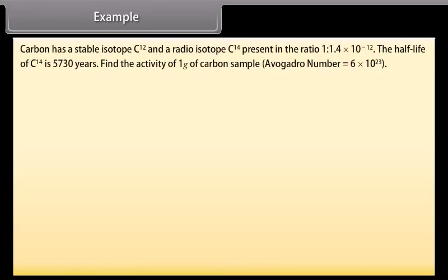Example. Carbon has a stable isotope Carbon 12 and a radioisotope Carbon 14 present in the ratio 1 is to 1.4 into 10 raised to the power minus 12. The half life of carbon 14 is 5,730 years. Find the activity of 1 gram of carbon sample.